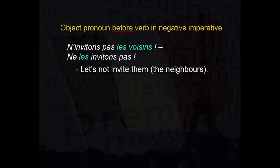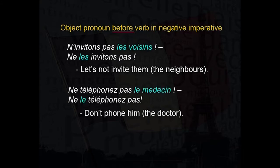Now let me show you some characteristics about object pronouns which we hadn't studied earlier. I'll first show how object pronouns are used with the imperative. Generally, the direct or indirect object pronoun is placed before the verb. This is true with the negative imperative as well: N'invitons pas les voisins becomes Ne les invitons pas — Let's not invite them, the neighbors. Ne téléphonez pas le médecin becomes Ne le téléphonez pas — Don't phone him, the doctor.